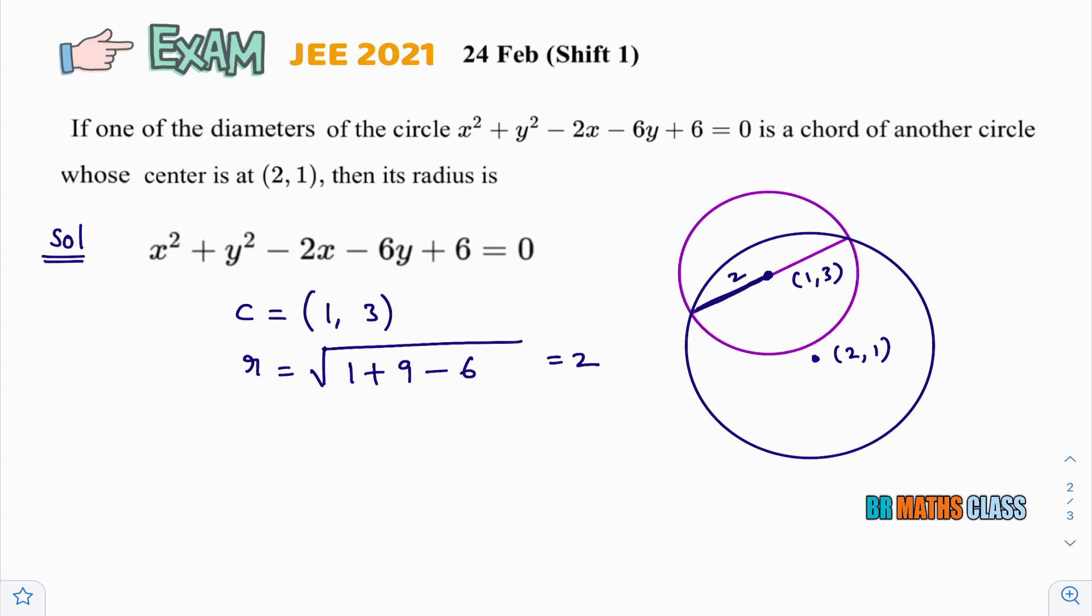Now, what I want to calculate? I want to calculate radius of the second circle. For that, you can observe here, distance between these two points we can calculate. Here, I will name these points as A, B, C. So, here I will calculate BC.